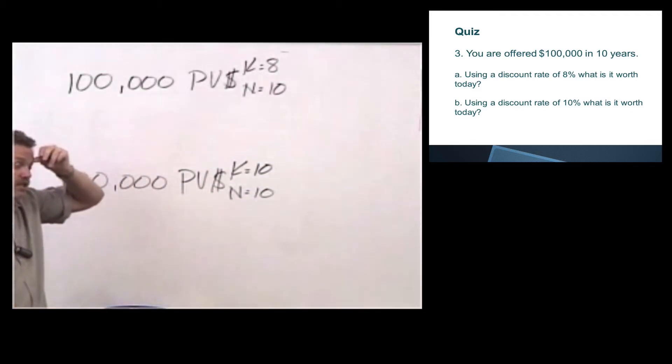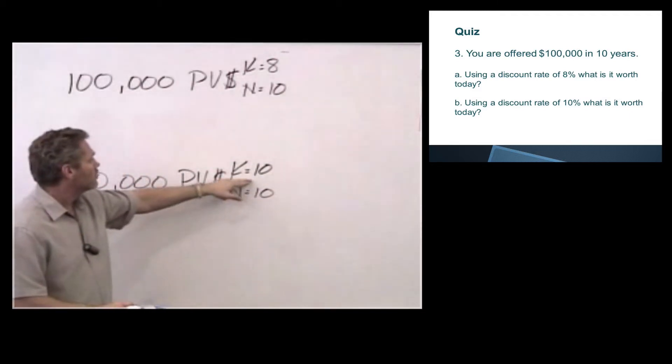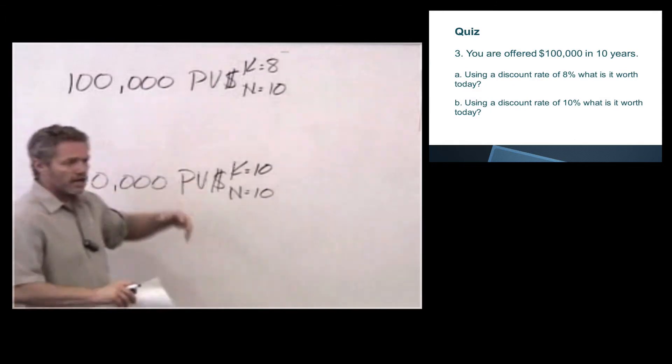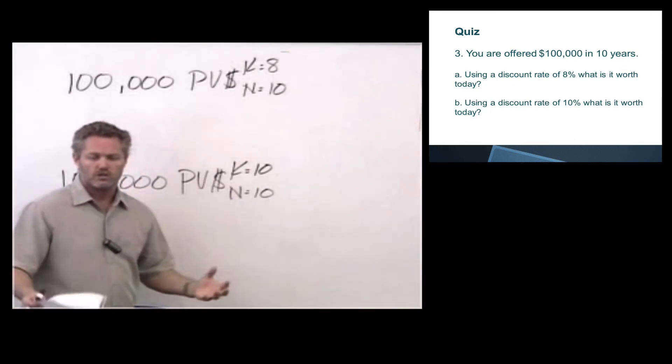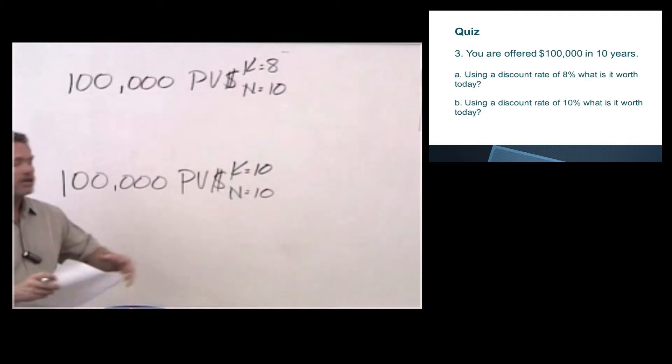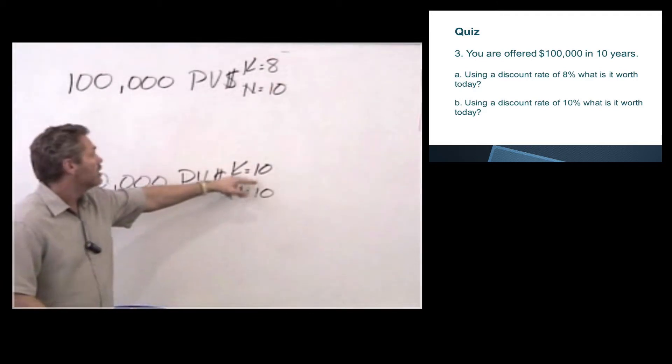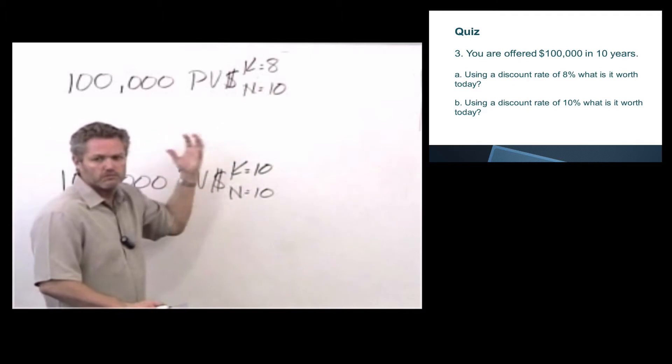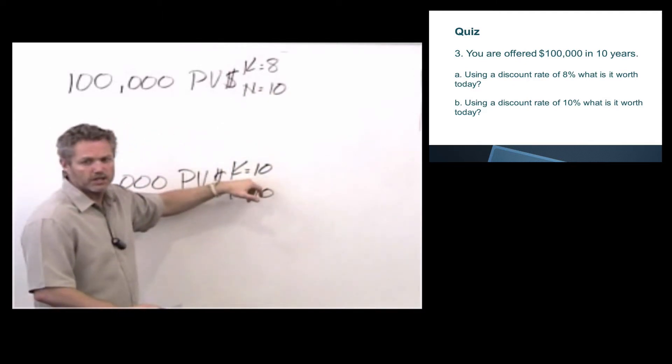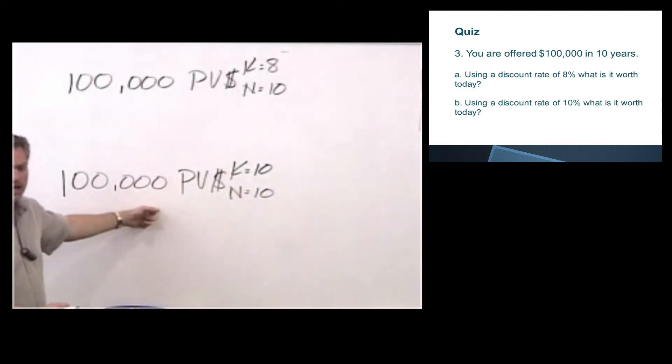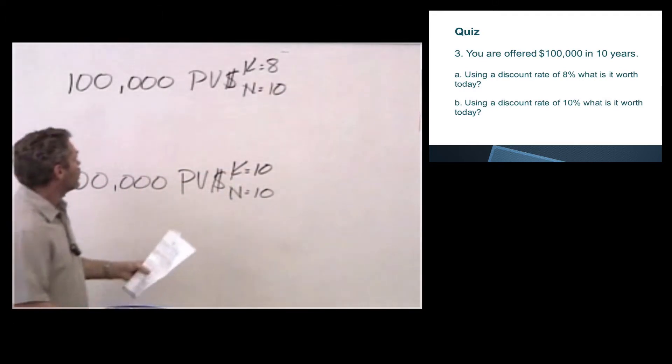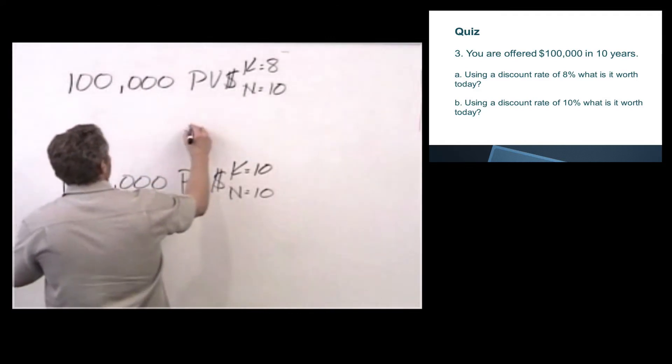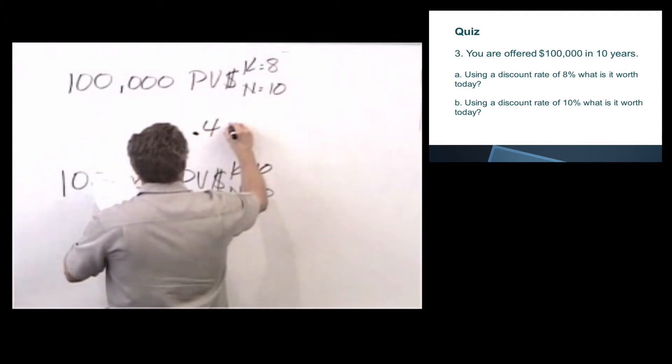Now, when we're discounting and coming back in time, the bigger the number for discounting, the smaller the number's going to be. So it's kind of like walking in like we talked about before. You walk into a store, you want to buy some shoes. You would rather see a 10% discount than an 8% discount. If I'm discounting at 8%, pretty good deal. Better deal if I got a 10% discount. This number's going to be lower. If it's not lower, we made an error. So I look up my factors. Present value of $1, K equals 8, N equals 10, that is .4632.